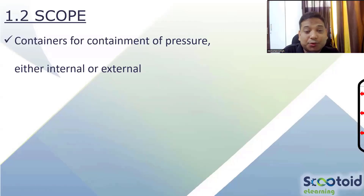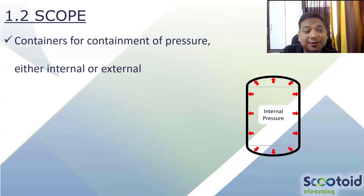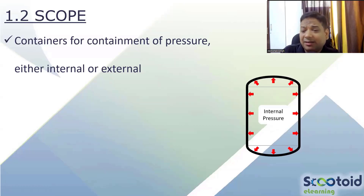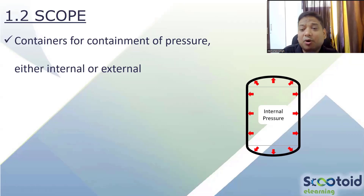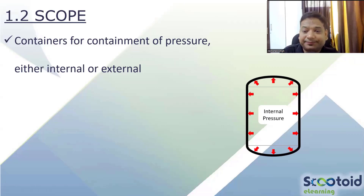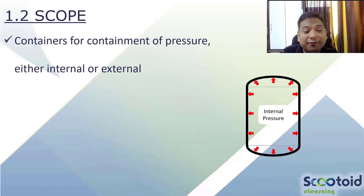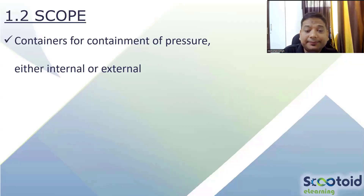The scope — what exactly is covered, which kind of equipment is covered in Division 2 — will be very similar to what you have seen in Division 1. It is for pressure vessels. The purpose of these containers is to contain pressure, maybe internal or external, but pressure is the main load for which we are designing.